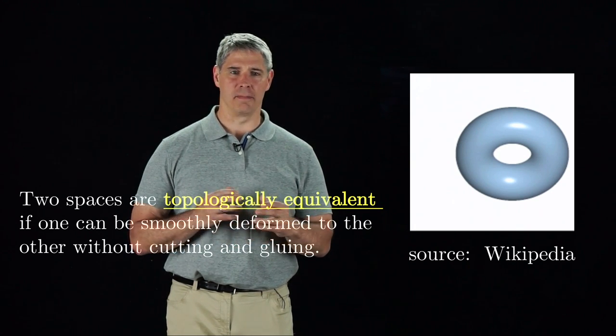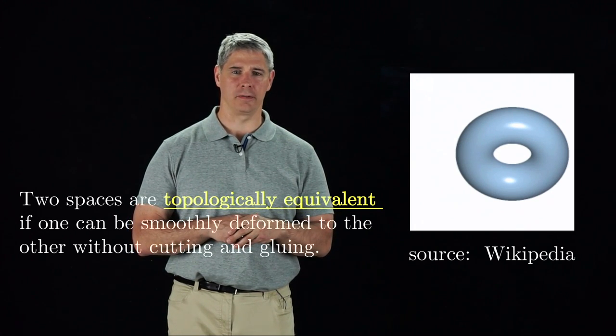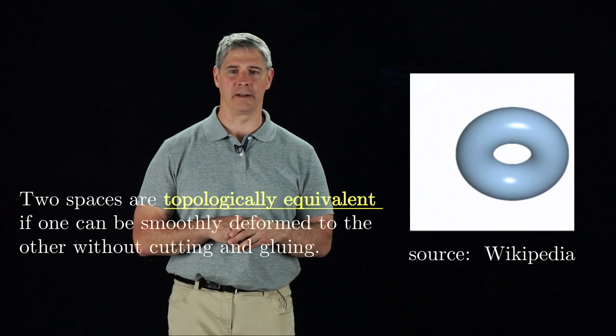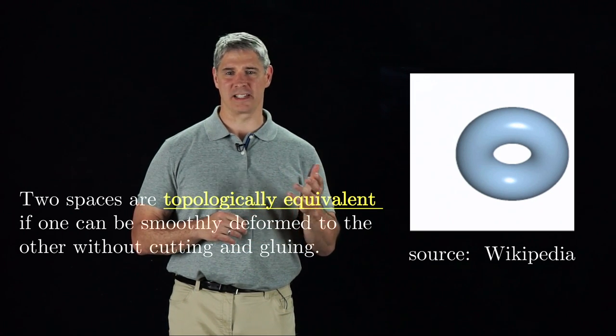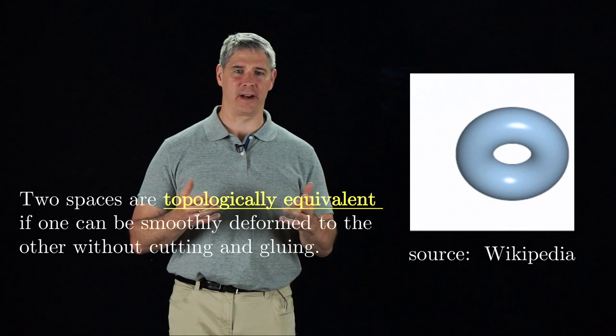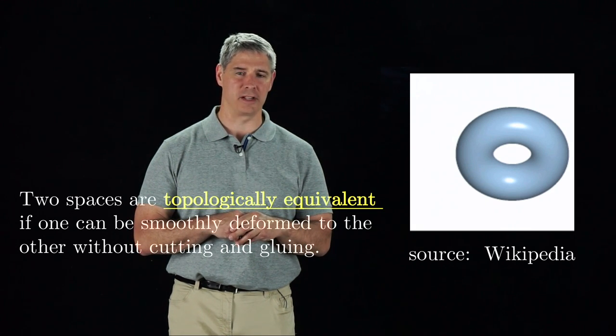That would require cutting. So the mug and the torus are topologically equivalent, but they are not equivalent to a plane. The topology of a space is a fundamental property and is not affected by our choice of how to represent the space with coordinates.